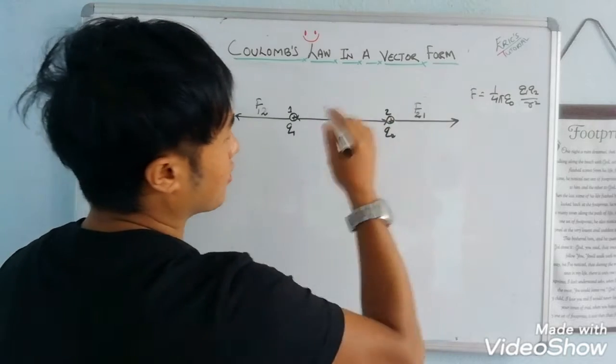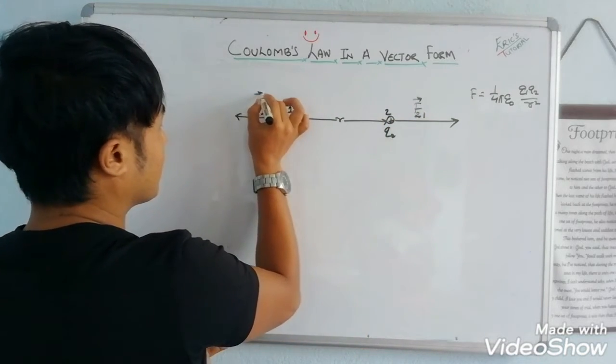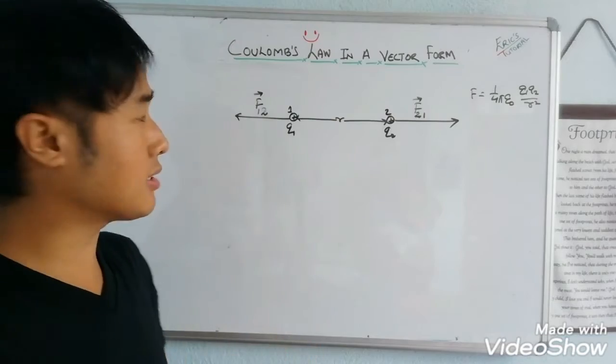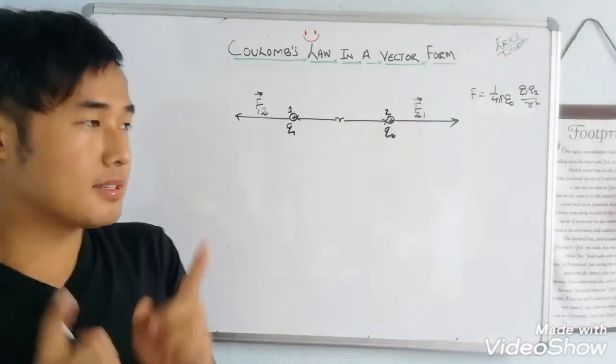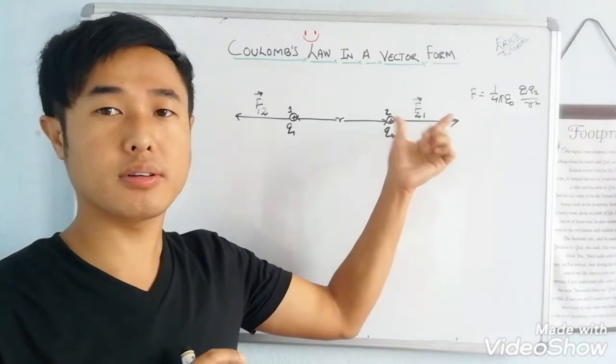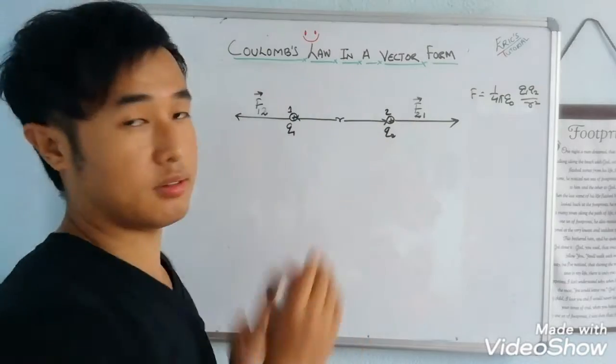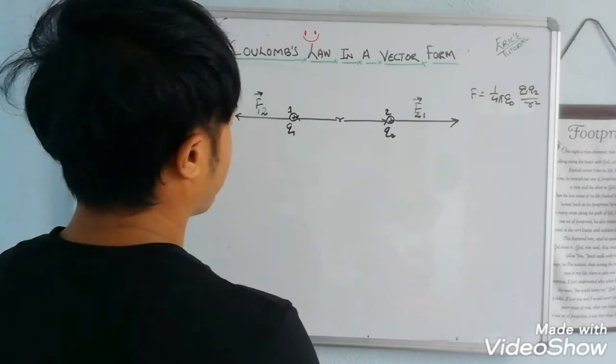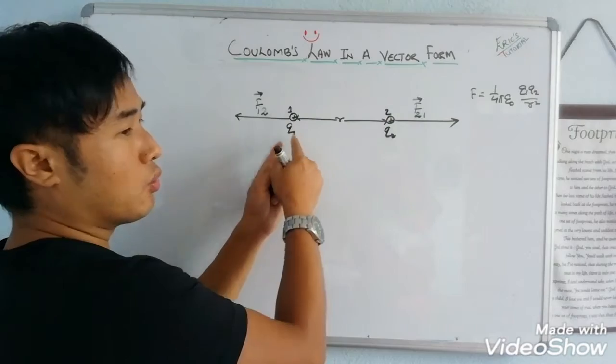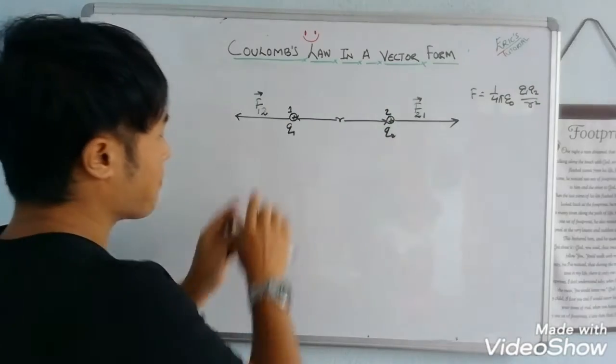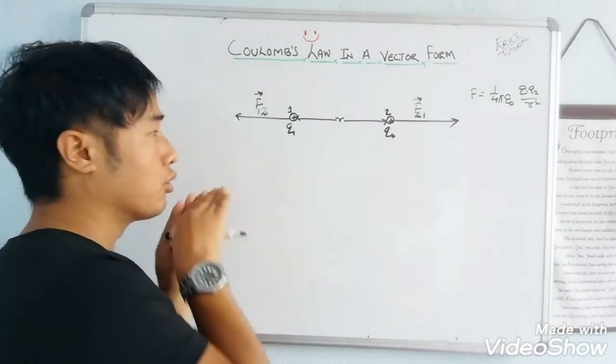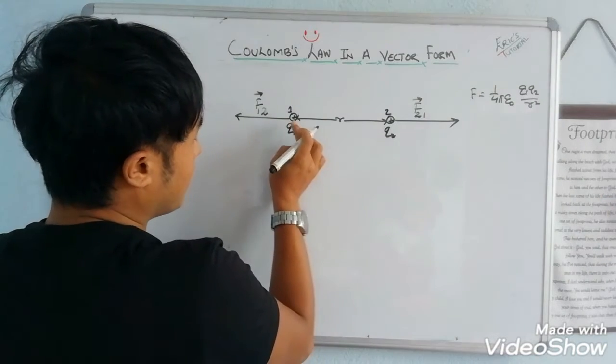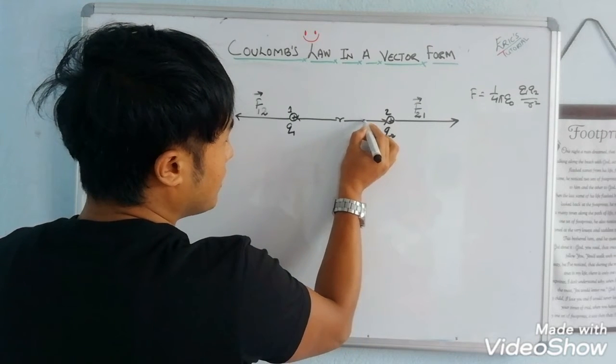So I'll just give the vector notation here. The force can be defined by F2,1 and F1,2. These are vector quantities, so they have magnitude and direction. The forces are in opposite directions. Now, in Q2, the force is from Q1. Q1 is giving force to Q2 in the direction to the right hand side.